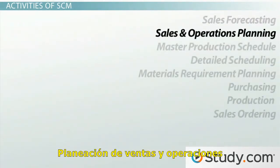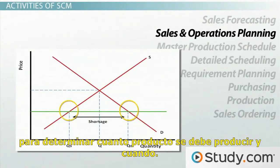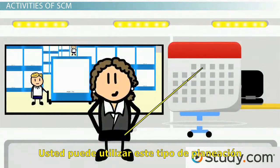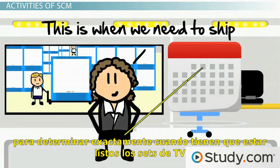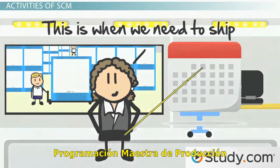Sales and operations planning examines customer demand and current inventory to determine how much product needs to be produced and by when. You could use this type of planning to determine when exactly you need to have the extra TV sets ready to get them into stores on time.